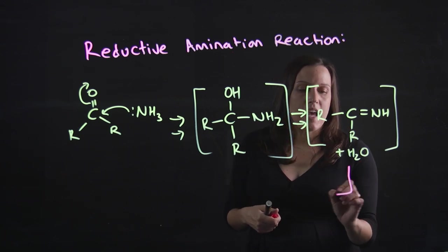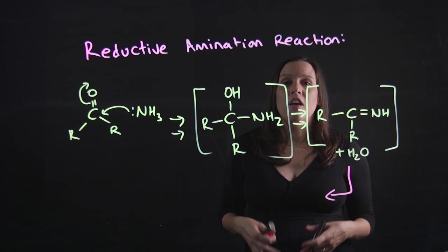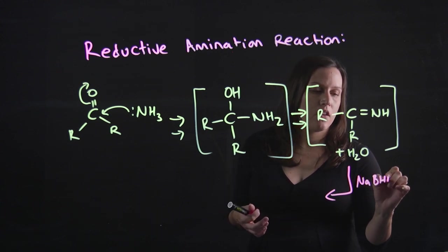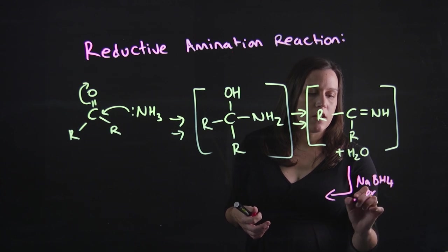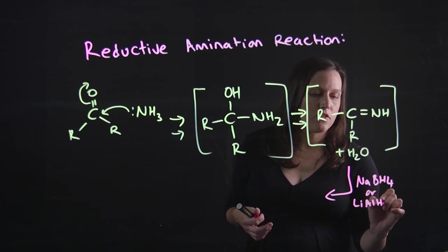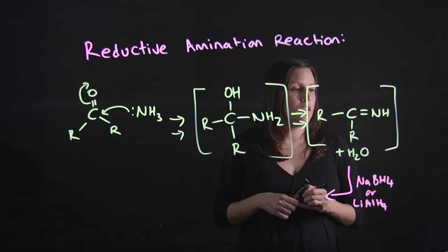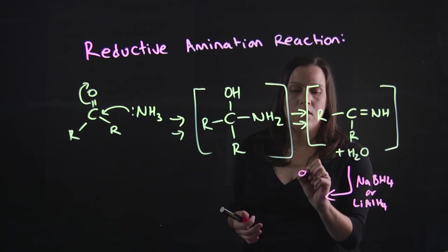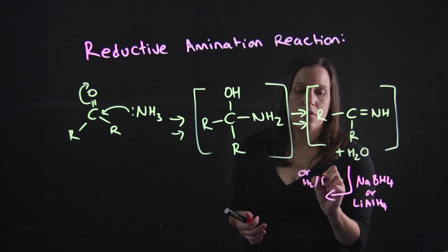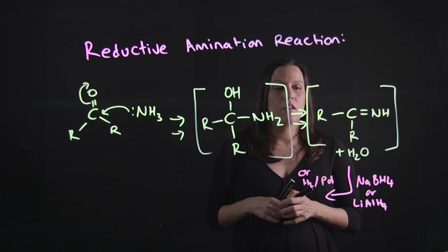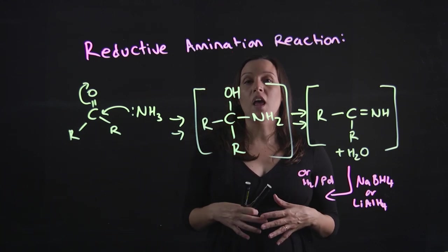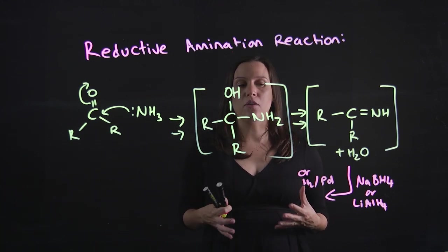Then the next day you come in and you add your reducing agent. Remember we could use sodium borohydride or we could use lithium aluminium hydride, or you could use the hydrogenation conditions - hydrogen gas with a palladium catalyst. Any one of those depending on your molecule and what other groups you've got in there that might be reduced.